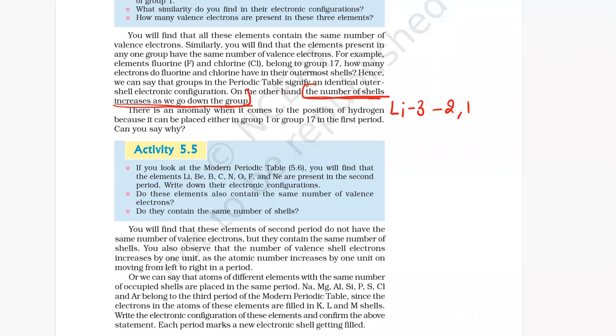So lithium 3: electronic configuration 2,1. Beryllium 4: 2,2. Boron 5: 2,3. Carbon 6: 2,4. Nitrogen 7: 2,5. Oxygen 8: 2,6. Fluorine 9: 2,7. And neon 10: 2,8.